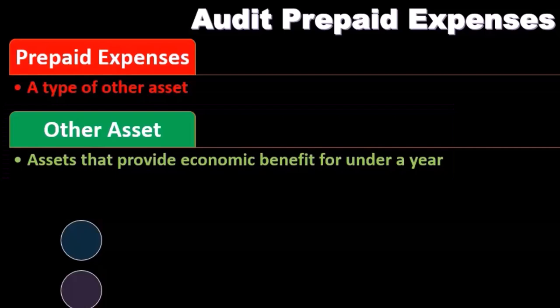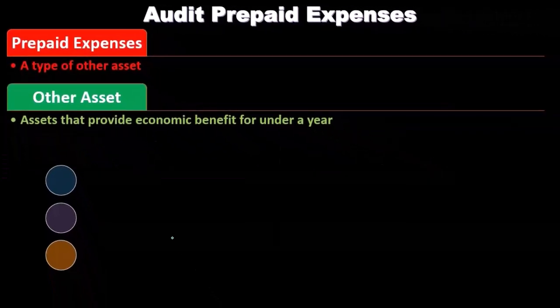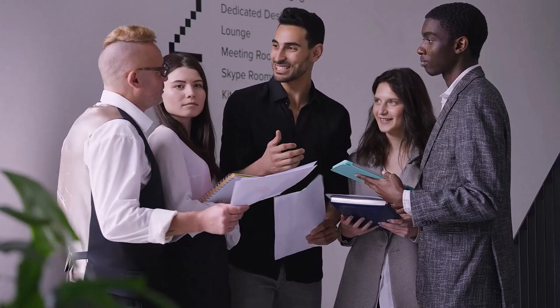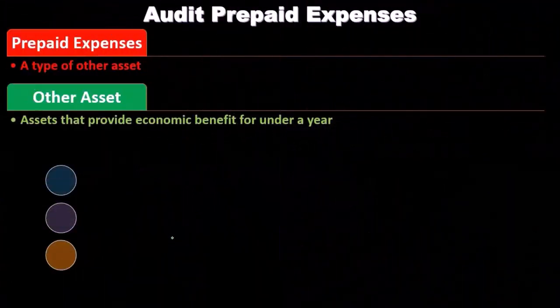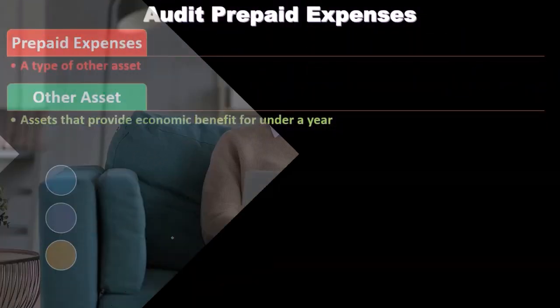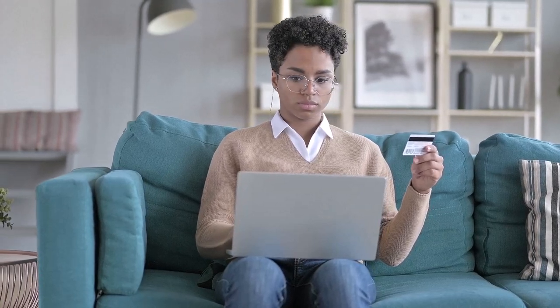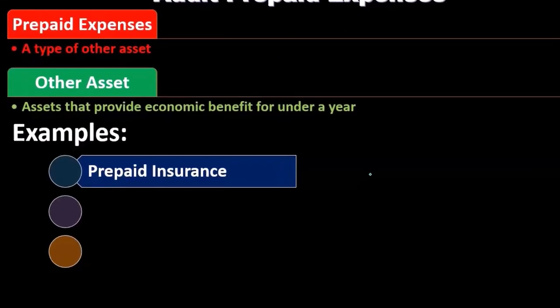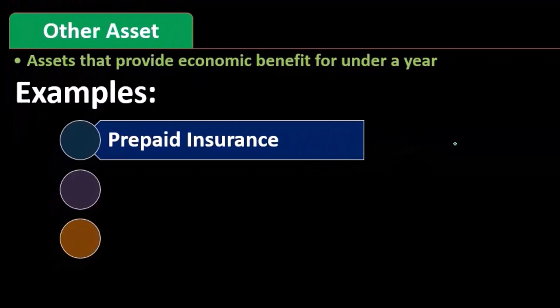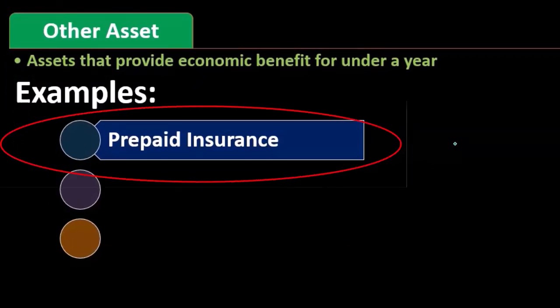When we consider prepaid expenses, we're thinking about those types of things where we have made a payment before we have received the benefit. The most common type of prepaid expense that we learned in financial accounting and would be audited in an audit is prepaid insurance. Insurance is the classic example because whenever we pay for insurance, by definition we're buying coverage for something that's going to be insured in the future.